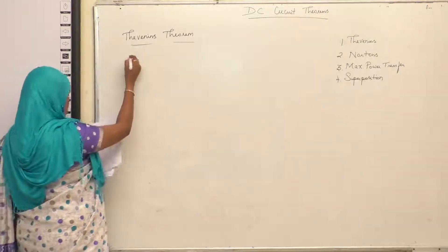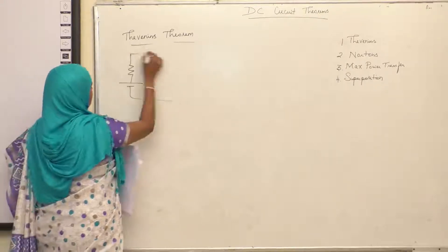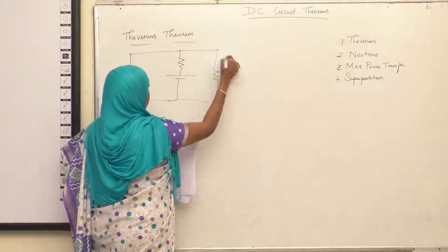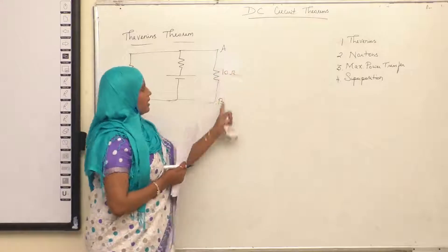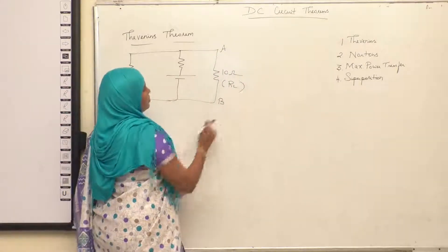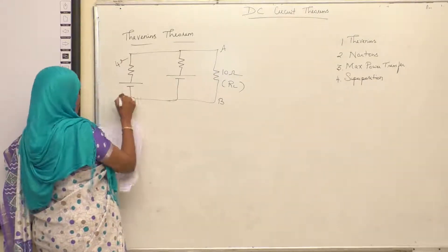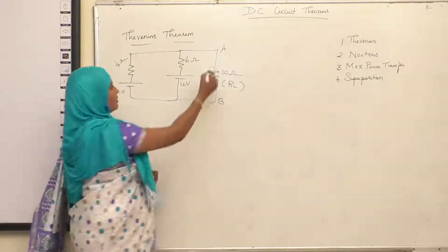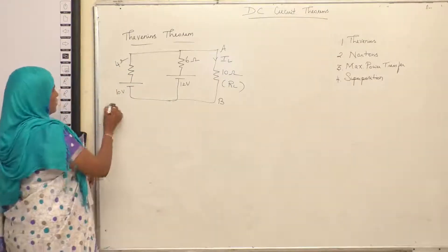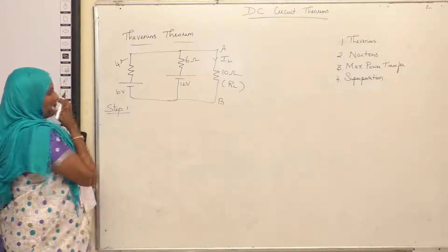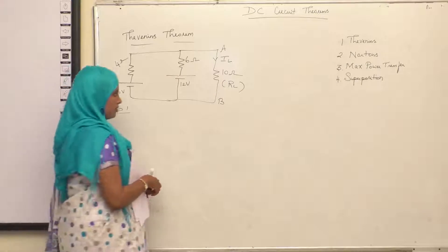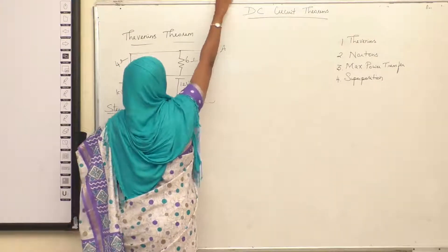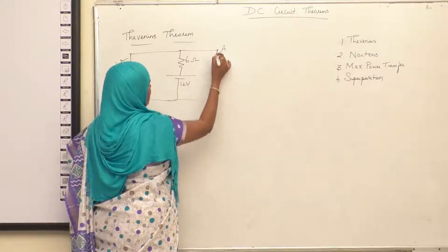I will now solve a simple problem. Any resistance connected between terminals A and B is taken as the load RL. In this circuit, the load is RL. Following those four steps, we have to find the current flowing through RL. Step 1 is to find VTH. To find VTH, you have to first remove the RL. So here is your RL — remove it. And in that place, mark VTH, that is the Thevenin's voltage.